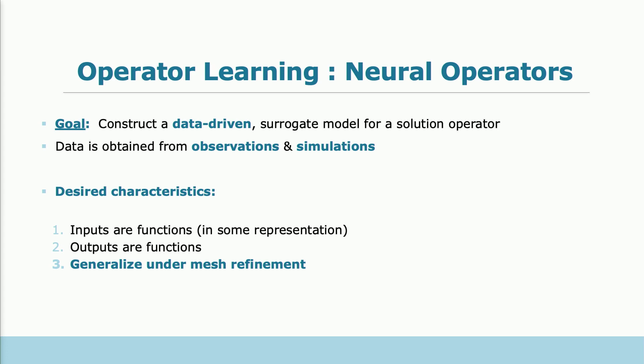And we want to have some characteristics of our models. Our models need to consider the inputs and outputs as functions in some discrete representation on some meshes. And they need to generalize under different meshes, because for a given continuous function, we can have a lot of discrete representations, so a lot of samples. But there is only one true continuous function that we want to learn.